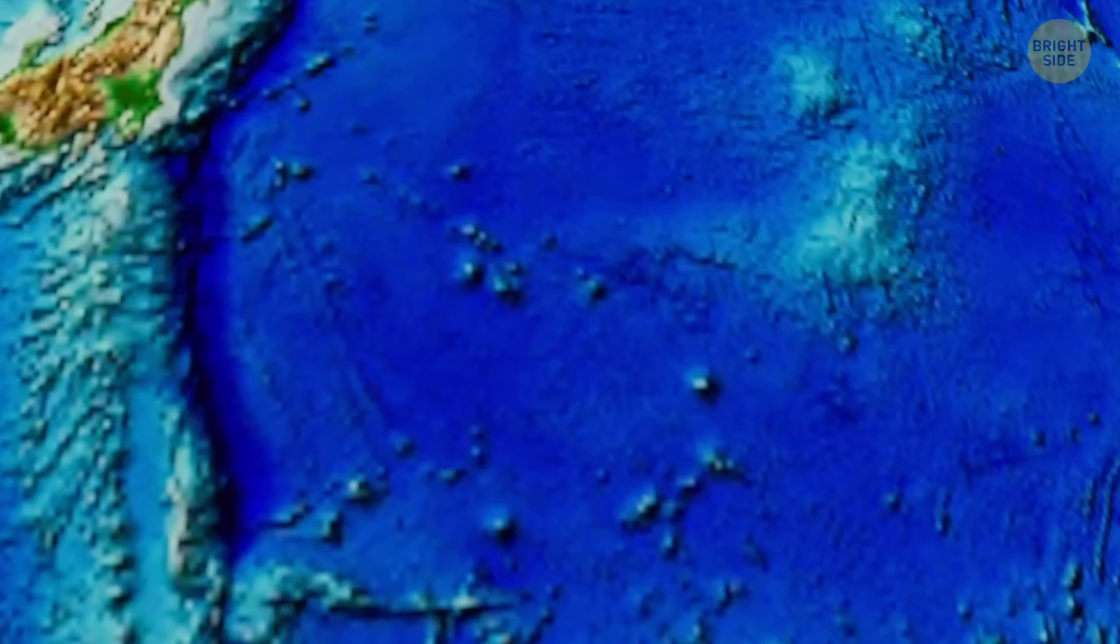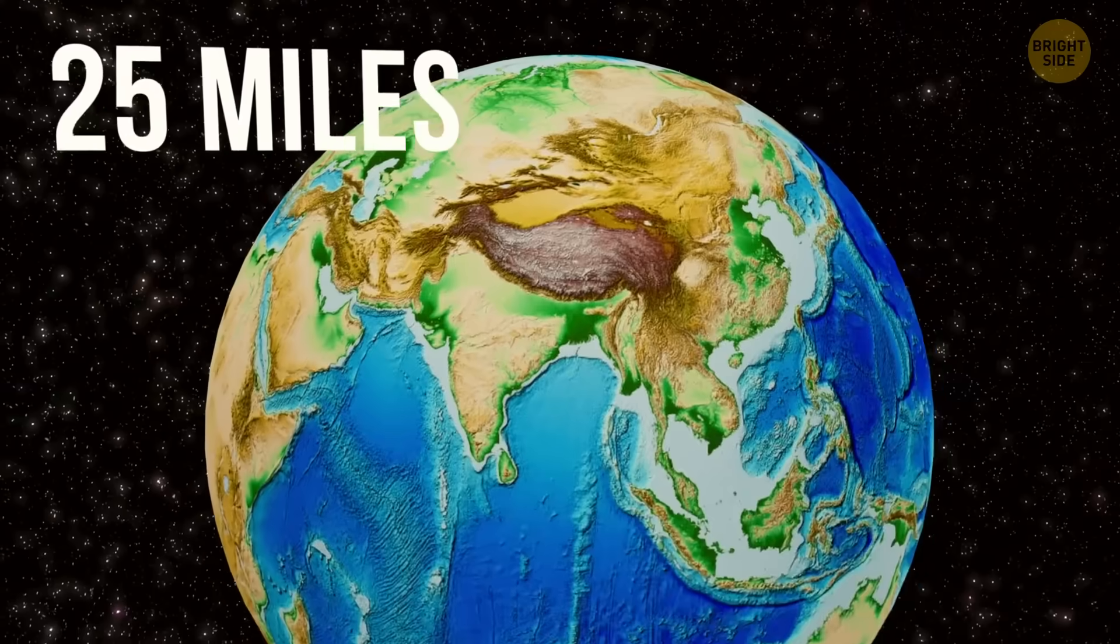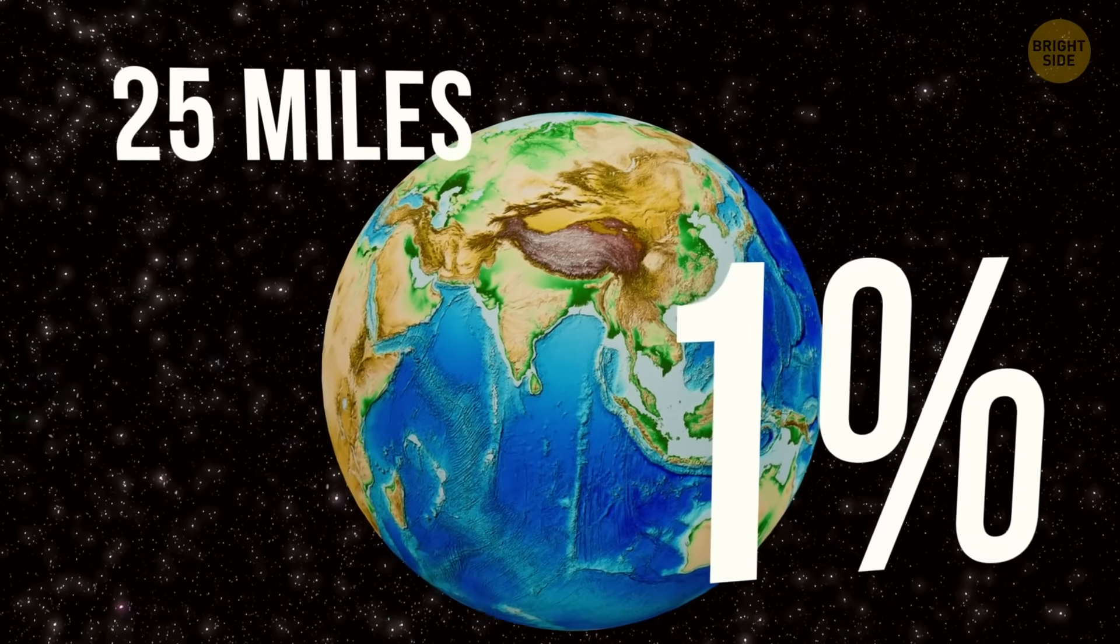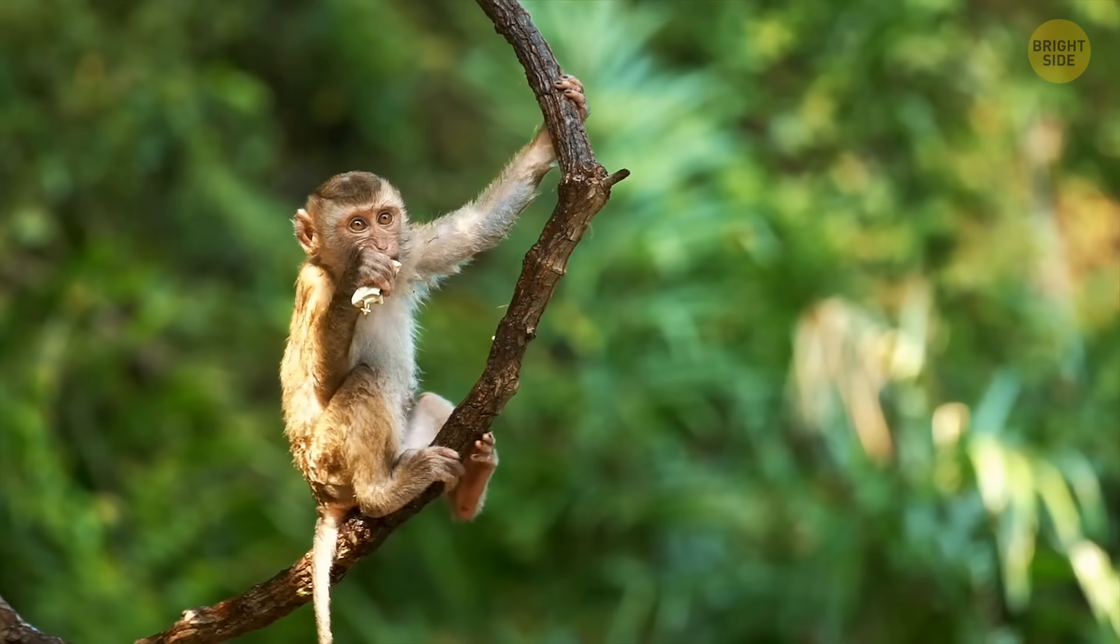As for the crust itself, it's the outermost layer of Earth. It's about 25 miles deep and makes up only 1% of the planet's mass. And yet, it holds all known life in the universe.